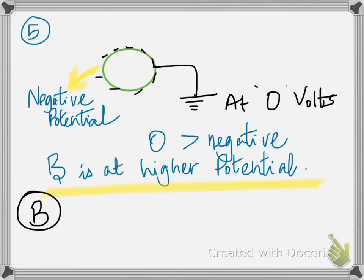And number 5, the object A has a net excess of electrons. That means it has a negative charge, which means it has a negative potential. It's connected to the ground. Ground is always at zero, and we know that zero is greater than negative. Therefore, the object B, which is grounded, is at a higher potential.